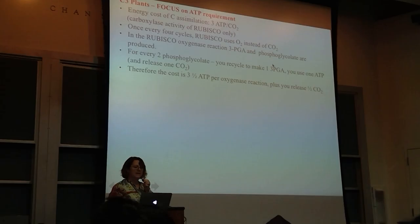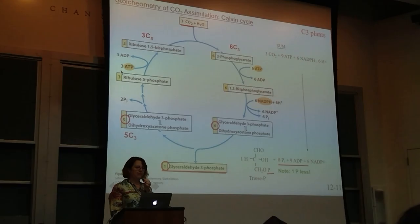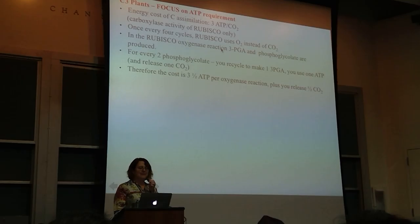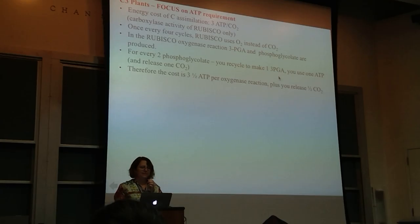Looking at the cost: if our C3 plant is 3 ATPs per CO2—taking 1, 2, 3 ATPs per CO2—but once every 4 cycles RuBisCO is using oxygen. When it does that, it gets 1 3-PGA and 1 phosphoglycolate. And then for every 2 phosphoglycolates, you have to recycle to make 1 3-PGA.